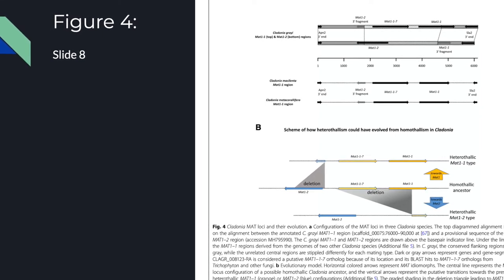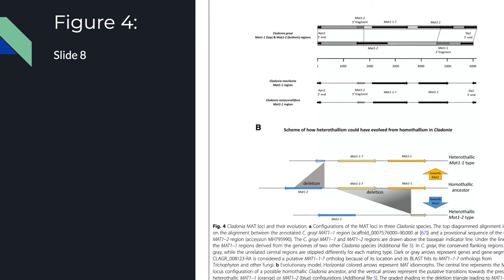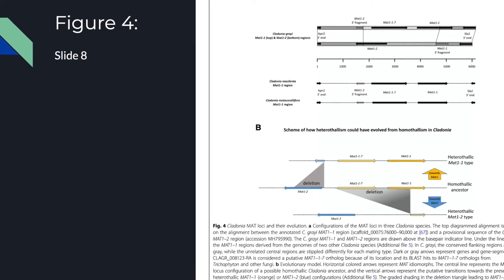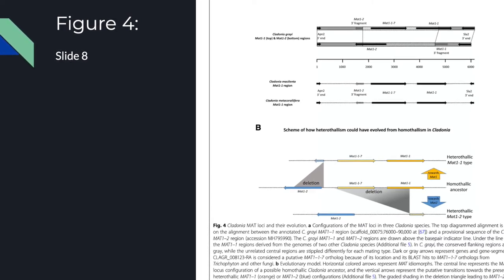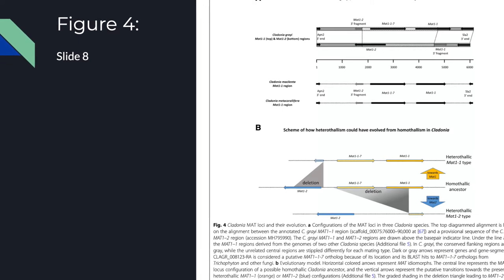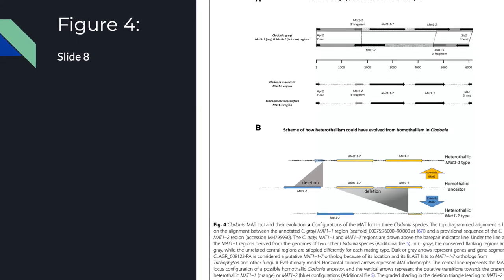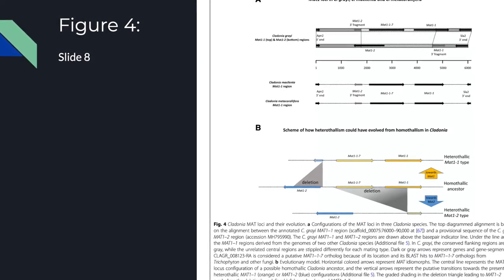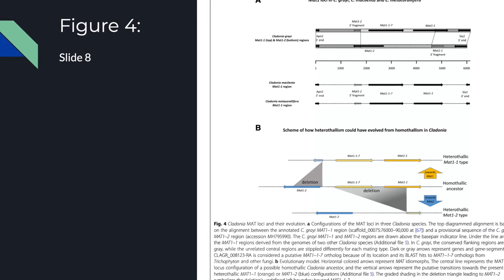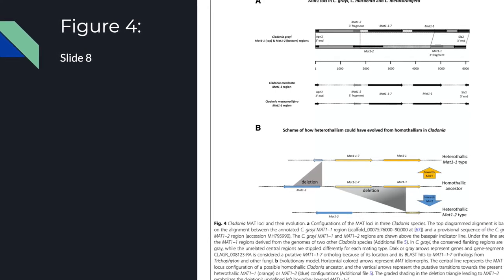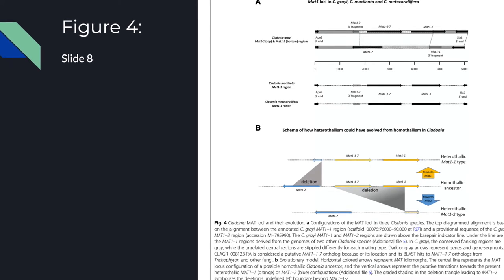You can see in figure 4a, the locus with MAT genes with Cladonia. You can see that the MAT1-1 gene in the ortholog, MAT1-1-7 gene, but there's no MAT1-2. Then on the bottom, you see MAT1-2, but no MAT1-1. There are vestigial sequences of these genes present. They also provide other Cladonia species with gene orthologs.